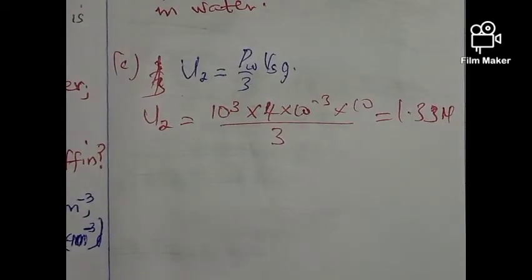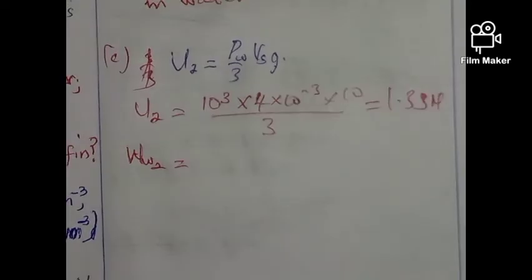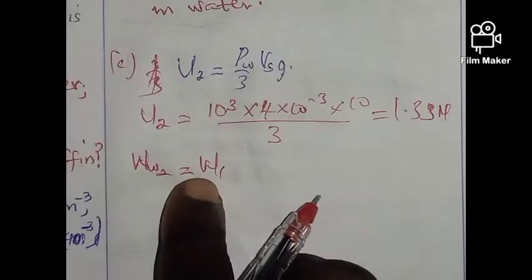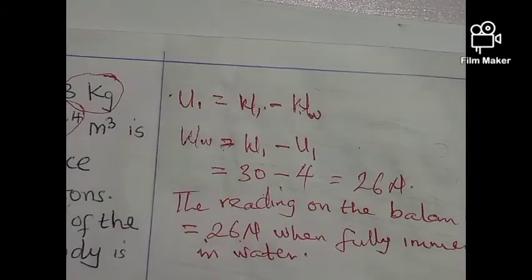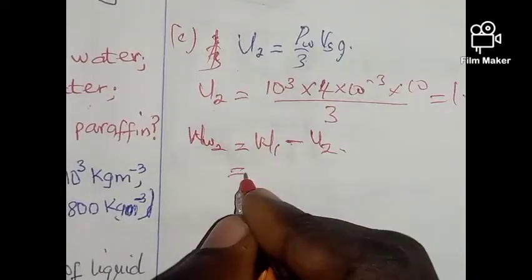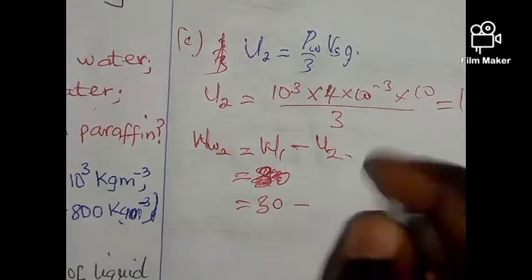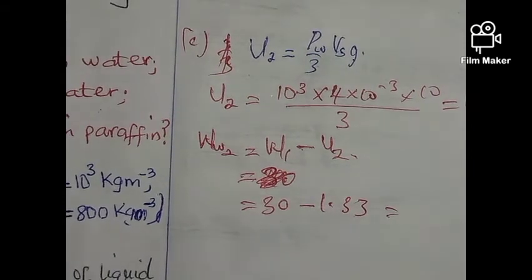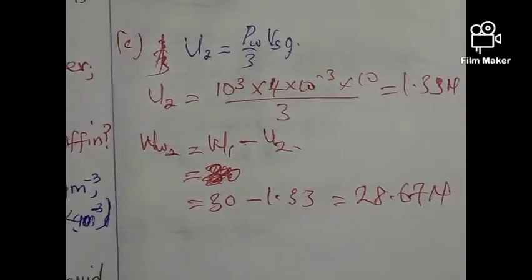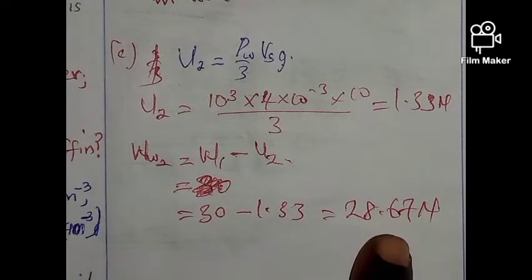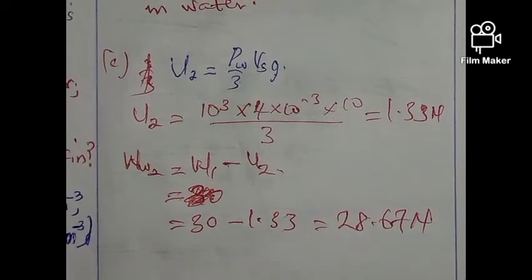The weight in liquid for part C equals W1 − U2 = 30 − 1.33 = 28.67 N. So the reading on the balance is 28.67 newtons when one-third of the volume is immersed in water.